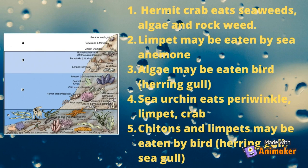Number 2: Limpet may be eaten by sea anemone. Number 3: Algae may be eaten by a bird, e.g. herring gull. Number 4: Sea urchin eats periwinkle, limpet, and crab. Number 5: Chitons and limpets may be eaten by birds, e.g. herring gull and sea gull.